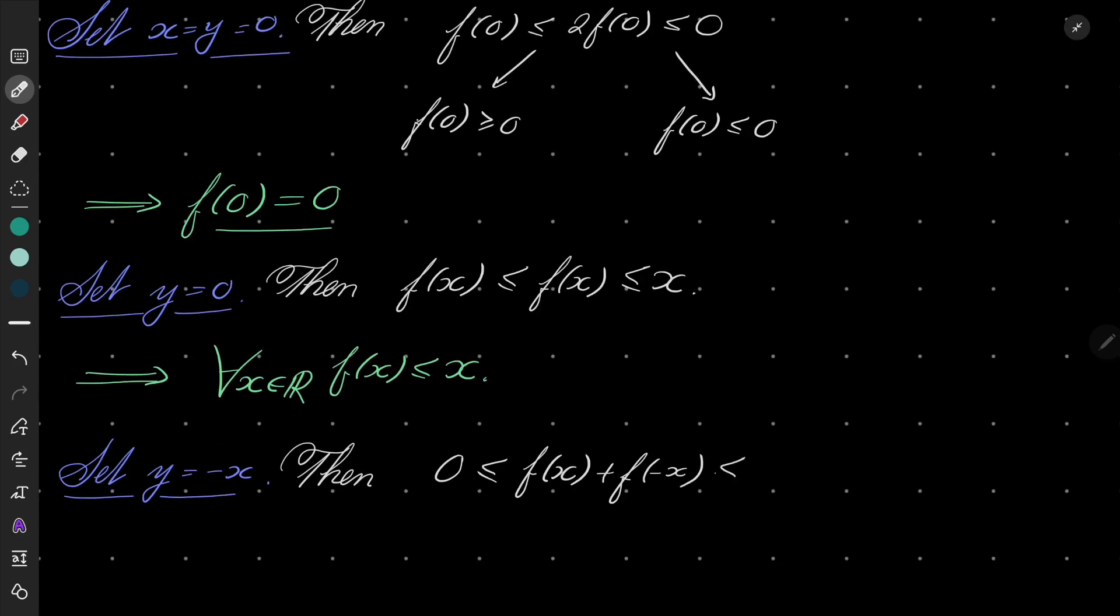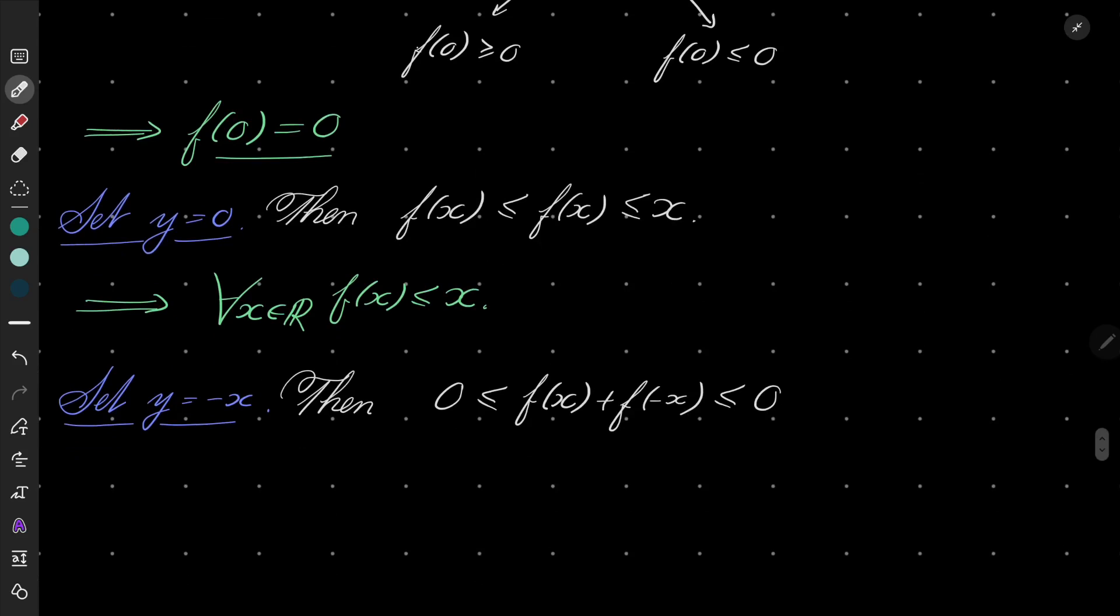And on the right hand side we also have 0. Well, for this to be satisfied, that means that for all real numbers, f(x) = -f(-x). So, in other words, our function must be odd.